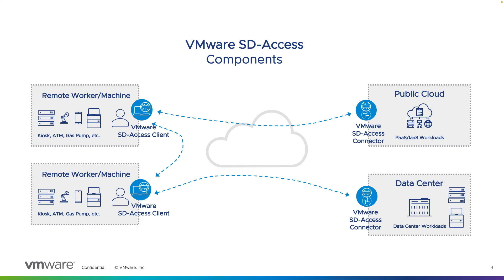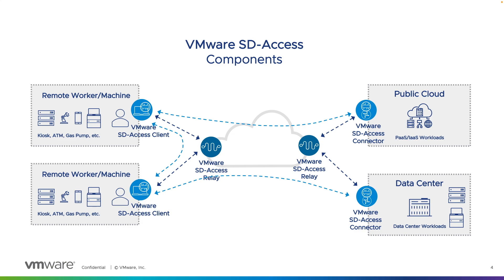Another component of the solution is VMware hosted optimization relays available globally, named SD Access Relay. These relays enable the unified multi-pathing capability of the solution. Based on path measurements, they help dynamically move traffic to the best available path between endpoints. When a direct path is not the fastest, relays find the next best alternative path based on network measurements of bandwidth, loss, latency, and jitter.